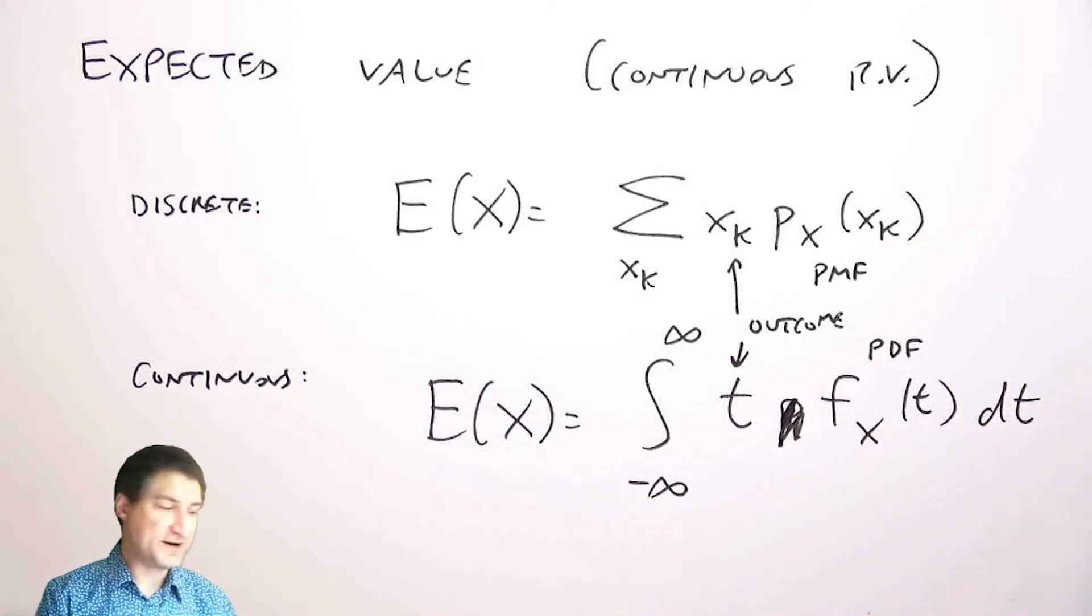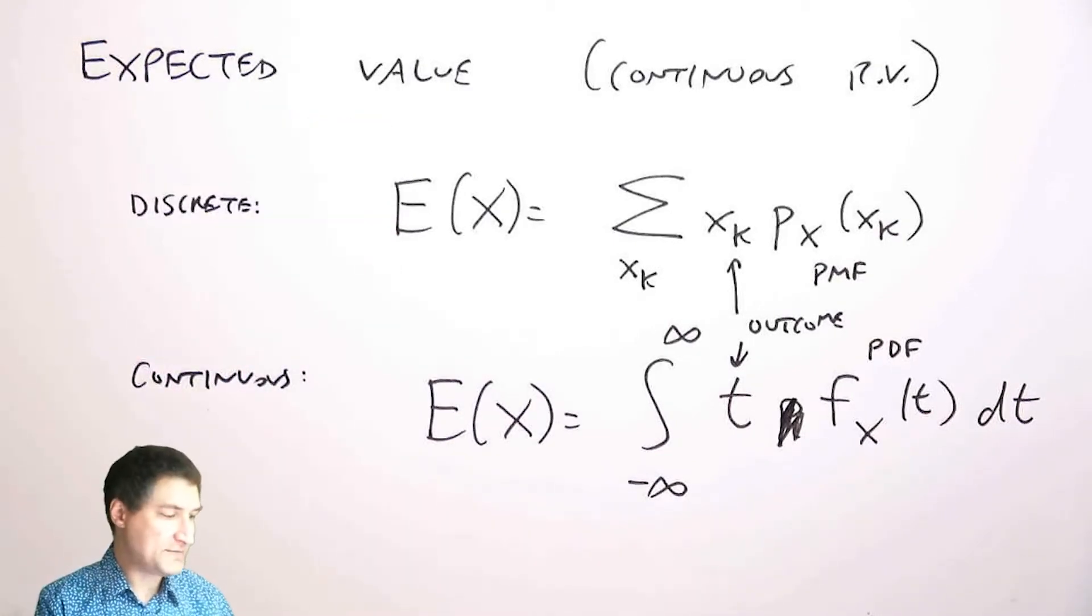So it's not actually very different than what we had before, and in fact you can show that when I think about the PMF as a sum of a bunch of shifted and scaled delta functions, that actually these are the very same definition. I'm not going to do that right now, but basically there's no conflict here, it's actually all the same thing.